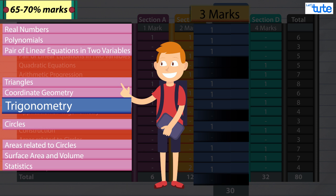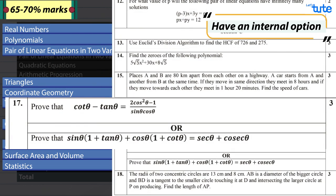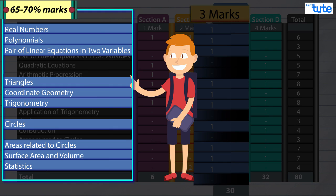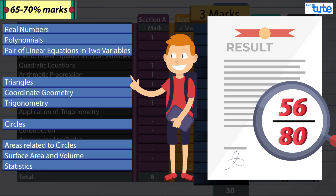Chapters like coordinate geometry, trigonometry and triangles, which are considered to be a little difficult, have an internal option. So you don't have to worry a lot about this. If you are sure that you are completely thorough with these 10 chapters, then no one can take away these 56 marks from you.